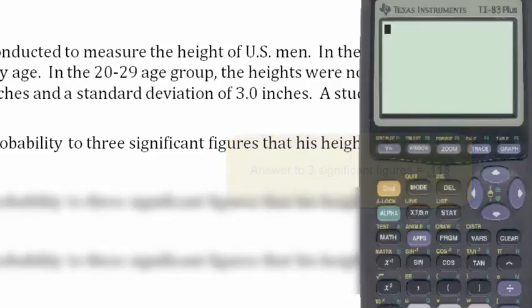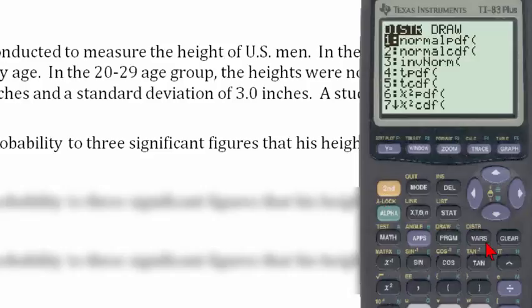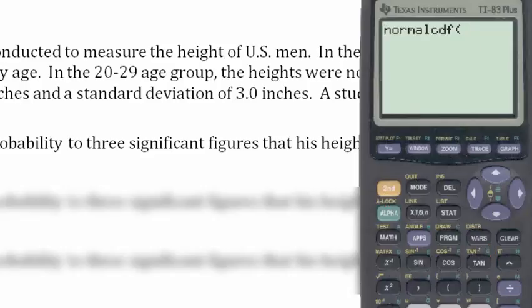Finally, the third way of doing this problem, again, uses the normal cumulative density function, but this time we will use the raw scores instead of the z-scores. So our input into the normal cumulative density function will be...